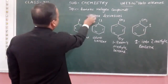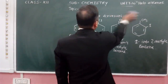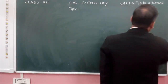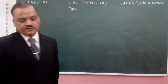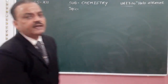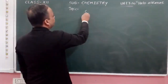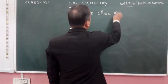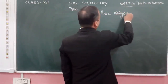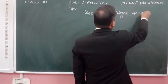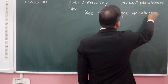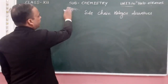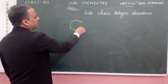Another type of products which we have — these products are called side chain halogen derivatives. They are side chain halogen derivatives. Side chain halogen derivatives — how they are formed.